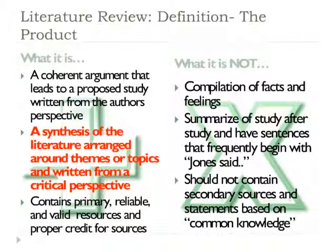Now that we've talked about what a literature review is not, let's talk about what it is and what truly is its purpose. A literature review is a coherent argument that leads to your proposed study — it's written from your perspective. Remember, it's not a summary of research; it's a synthesis. Synthesis means higher-order thinking and analysis. It's a synthesis of the literature arranged around themes and topics. You may start with 'Joan said this, Anderson said this,' but you should start looking for those themes in the literature and develop argument points around those themes. Again, it's written from a critical perspective, and it should contain primary, reliable, valid, peer-reviewed sources.